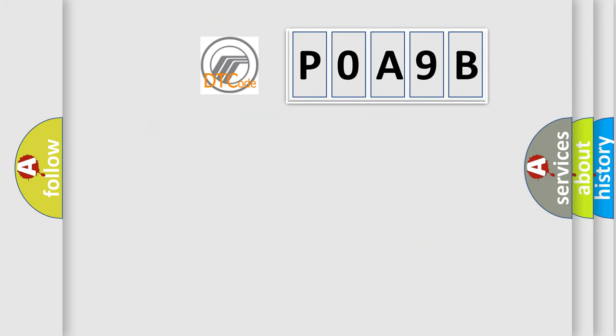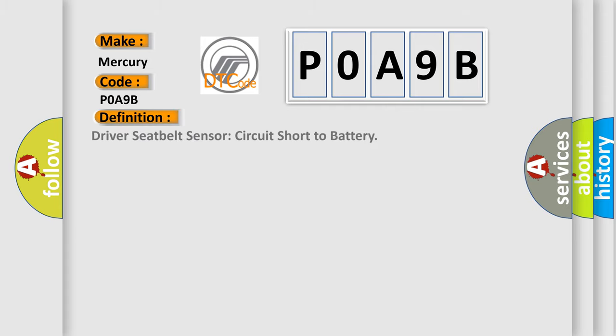So, what does the diagnostic trouble code P0A9B interpret specifically for Mercury car manufacturers? The basic definition is: Driver seat belt sensor circuit short to battery.